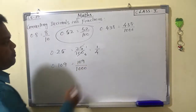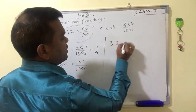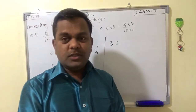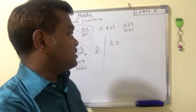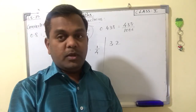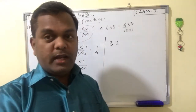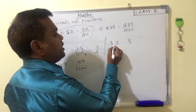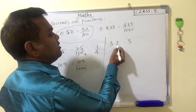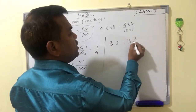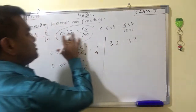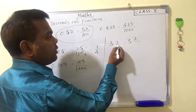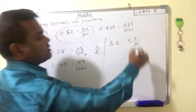One example from your book: 3.2. Convert into fractions. 3 is a whole number, so no need to do anything — simply write 3 as itself. After the point there is only one number, that is 2. So we write 2 divided by 10, since there is only one decimal place.